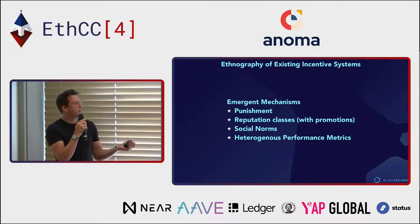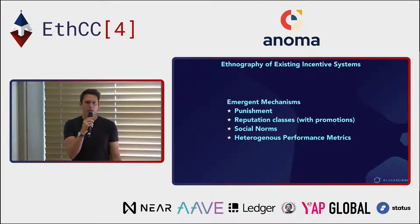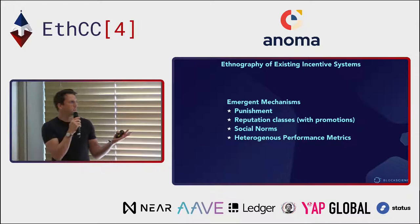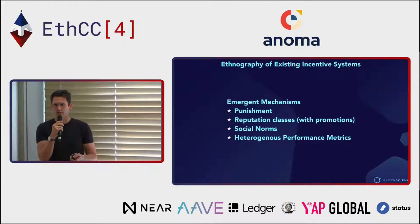These are some examples of the incentive systems you find in the real world. Punishment — closer to staking and slashing. Reputation classes with promotions. Certain social norms — groups will stay small enough or cohere around some sort of identity such that non-monetary incentives can remain robust, and people will feel a level of reciprocity. And then we have heterogeneous performance metrics, which are quite heterogeneous as far as we can tell. What you're ultimately seeing is a kind of Cambrian soup of different incentive structures that emerge to solve different particular problems. That's one of the interesting things we go into the approach of incentive design with — the assumption that you might have heterogeneity in the way you want to incentivize these people.